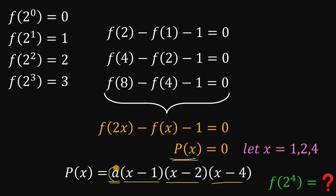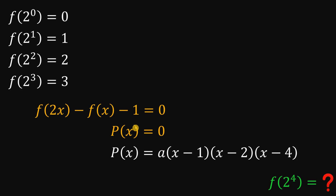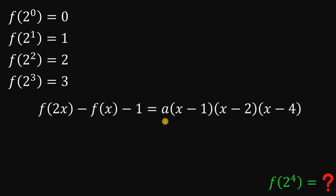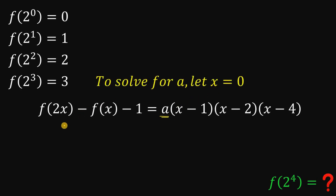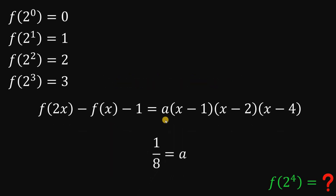Now the goal is to find the value of constant A. To do that, let's equate f of 2x minus f of x minus 1 to A times (x minus 1)(x minus 2)(x minus 4), and let x equal 0. The left-hand side becomes f of 0 minus f of 0 minus 1, and f of 0 minus f of 0 is just 0, so we get negative 1. The right-hand side is negative 1 times negative 2 times negative 4, which is negative 8. Dividing both sides by negative 8, A equals 1 over 8.